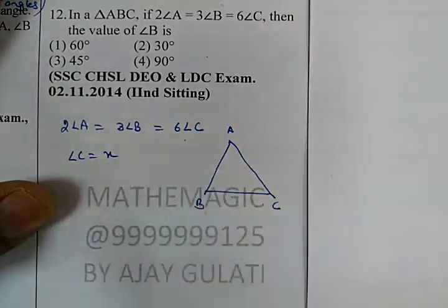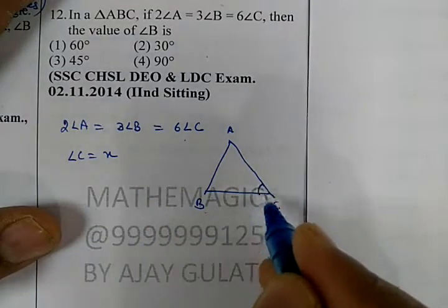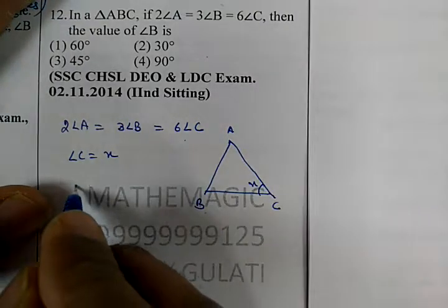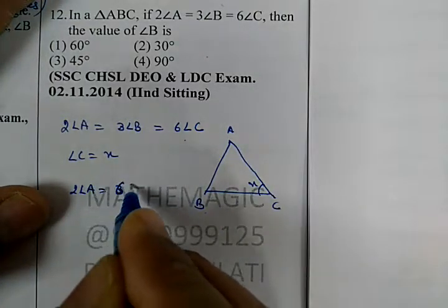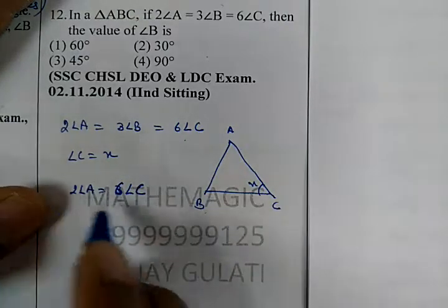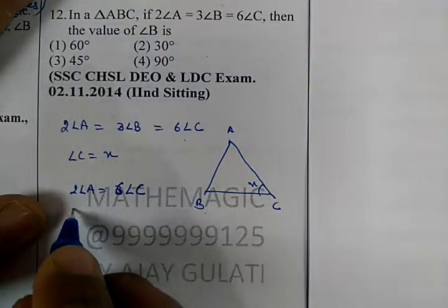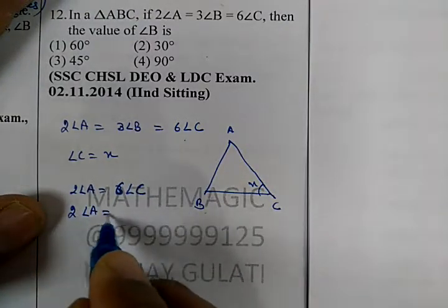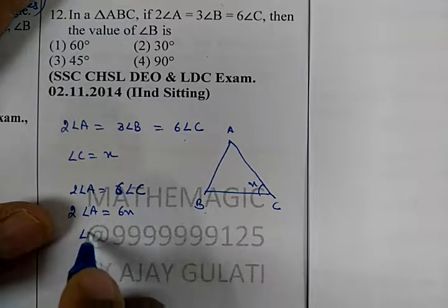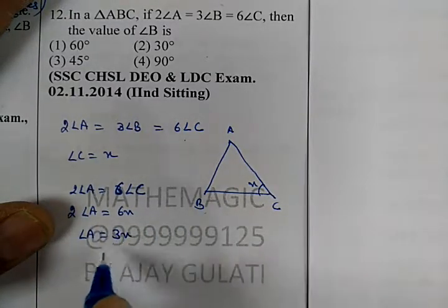is equal to X. Okay, C equals X. Okay, six times angle C. You need twice of angle A is equal to 6X. Angle A